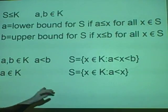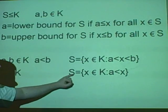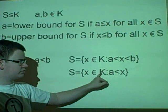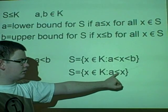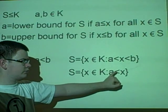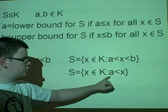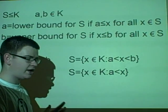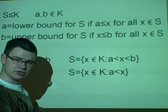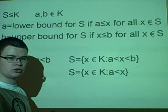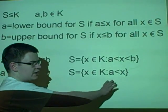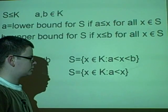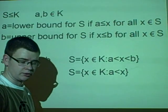We have another example where we have A as an element of K, and the set S such that all elements of K are greater than A. This has a lower bound of A or anything less than A, but it does not have an upper bound because X can be anything up there. So this is known to be not bounded.